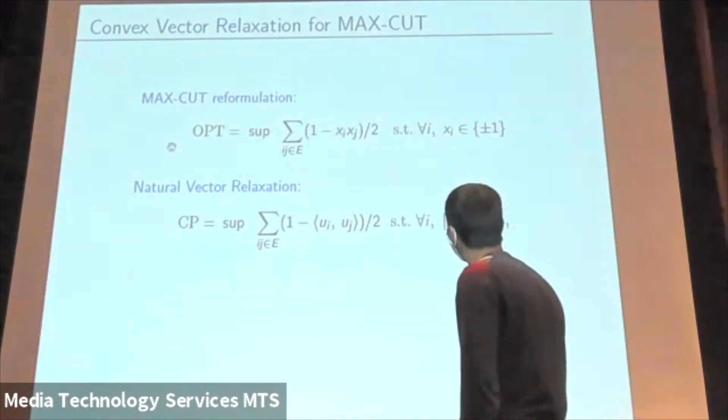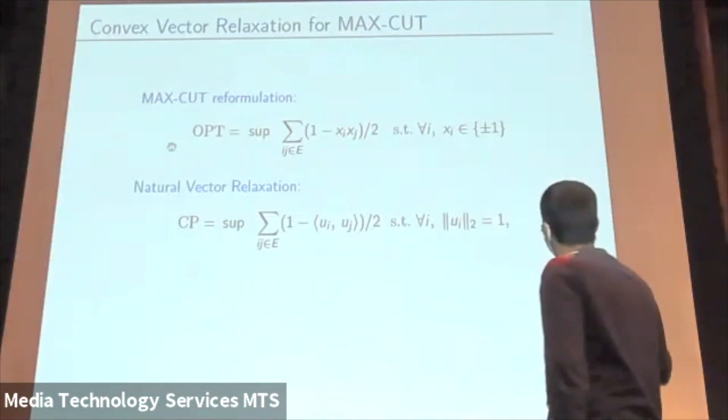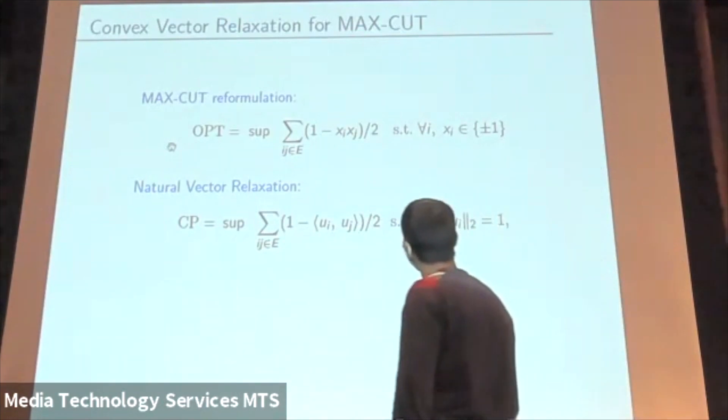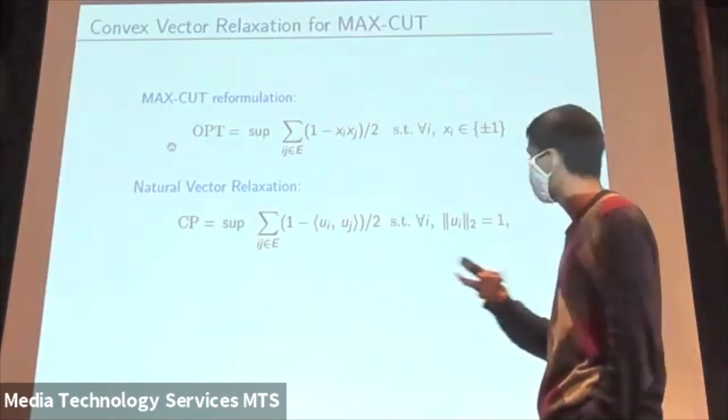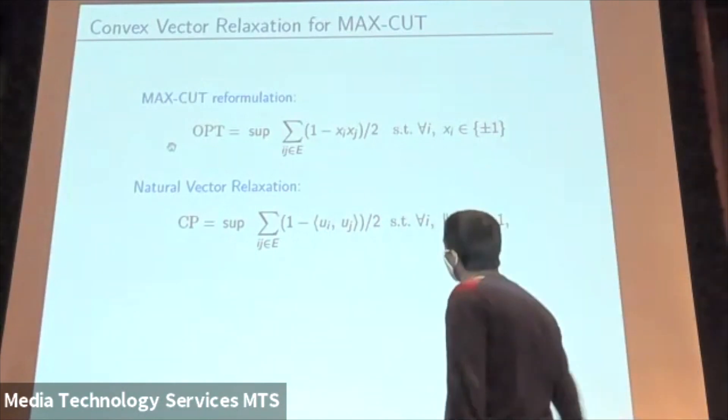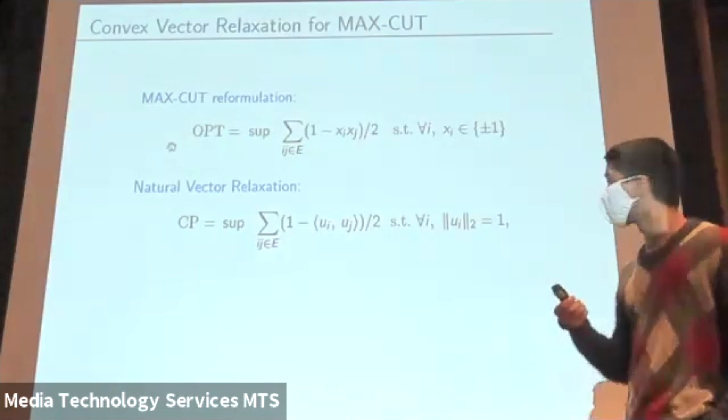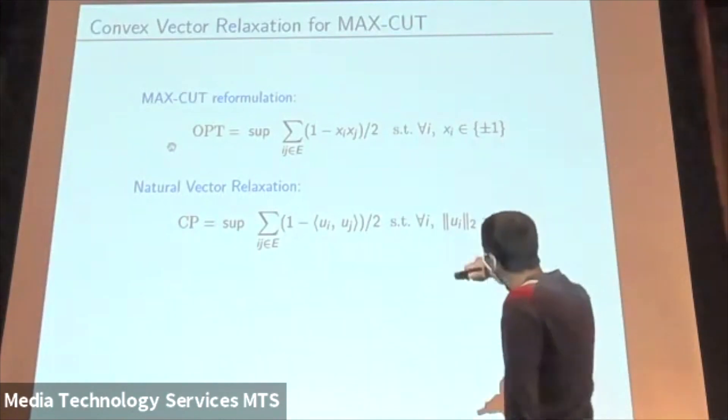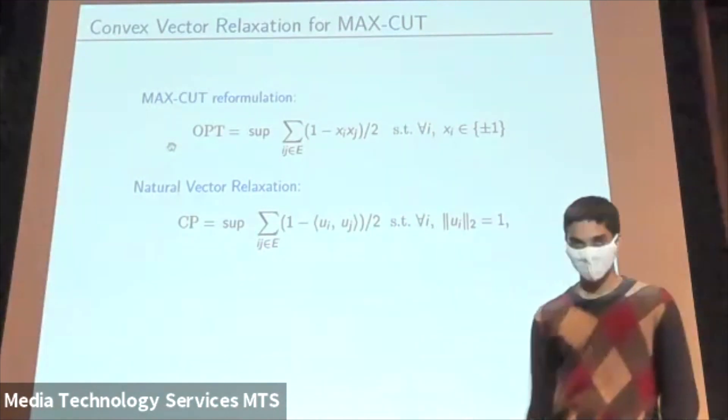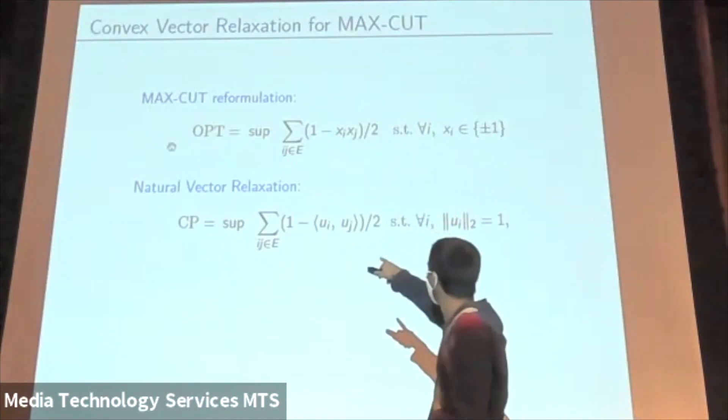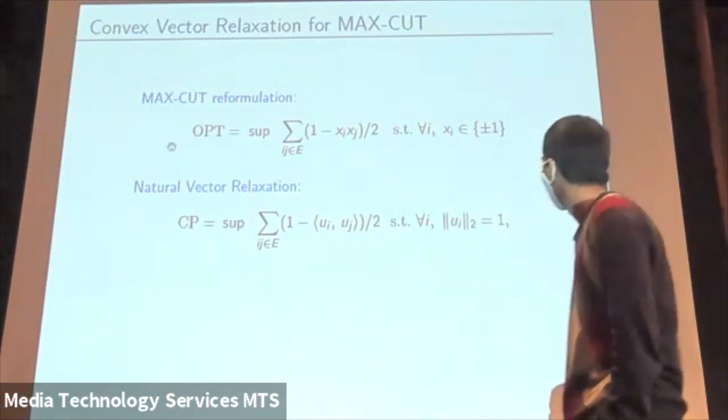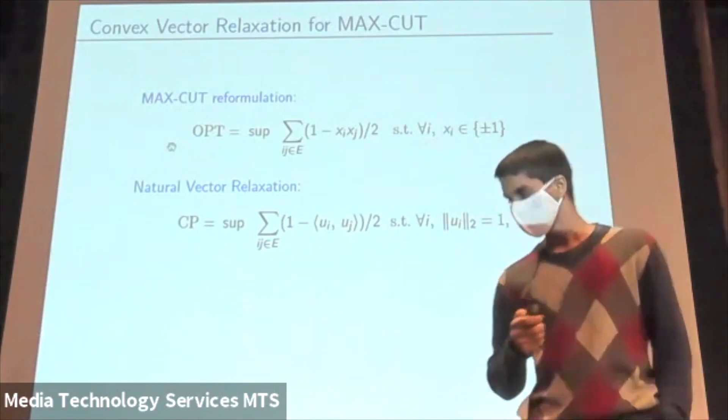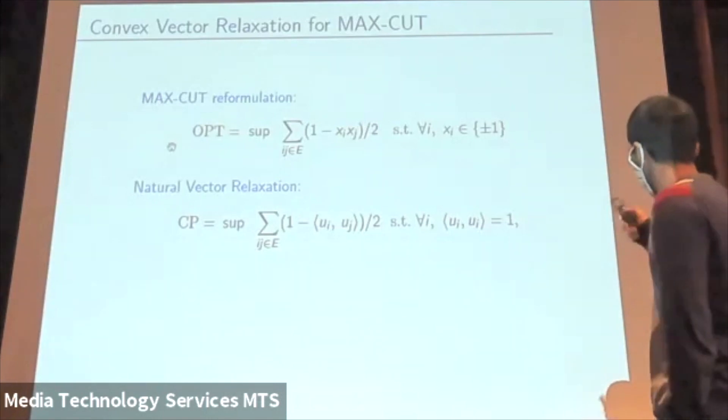The goal is to maximize summation (1 minus xi xj) over 2 where these variables x are plus minus 1. Setting xi to plus 1 corresponds to putting it in one partition, and minus 1 is the other side. This (1 minus xi xj) over 2 is a function that's one when an edge is straddling the cut and zero otherwise. So I just trivially formulated the problem. Now we're actually going to relax this non-convex problem to a convex problem. In fact, we're going to relax it to a higher dimensional region that is convex. What we're going to do is replace every variable xi by a vector ui. Symbolically we replace the product xi xj by the inner product of the vectors ui and uj. The constraint that xi needs to be plus or minus 1 is replaced by the constraint that this vector ui is on the unit sphere. Another way, ui inner product with itself is equal to 1.